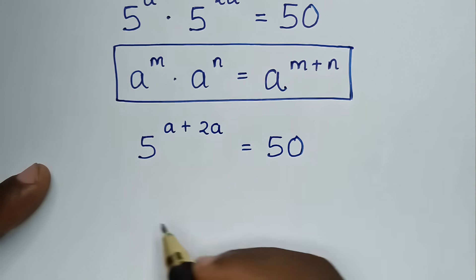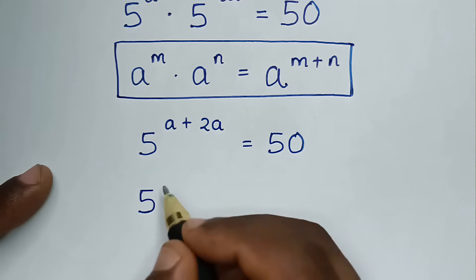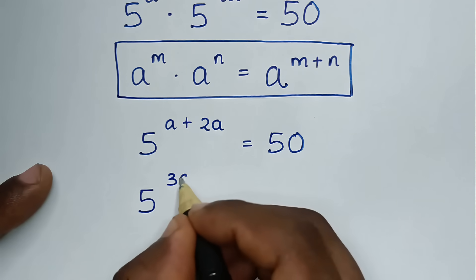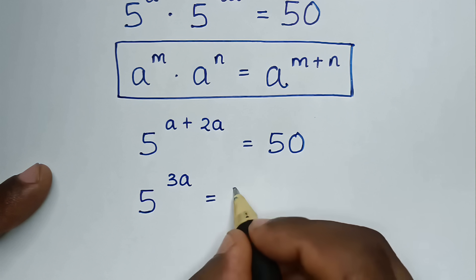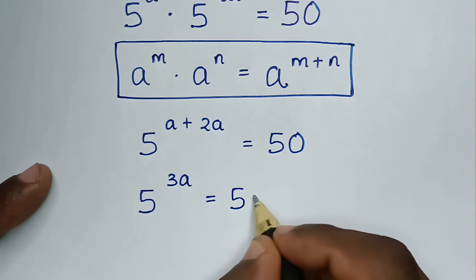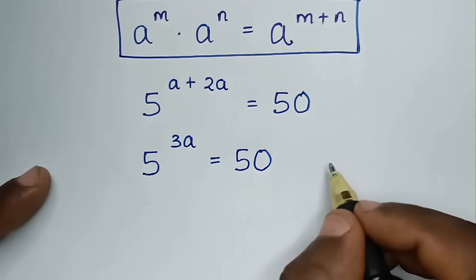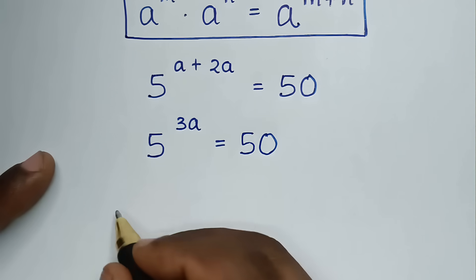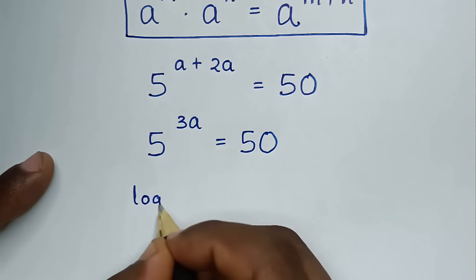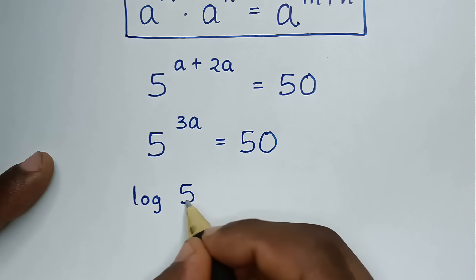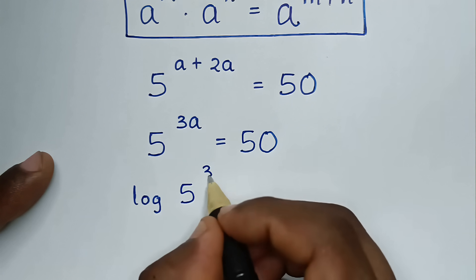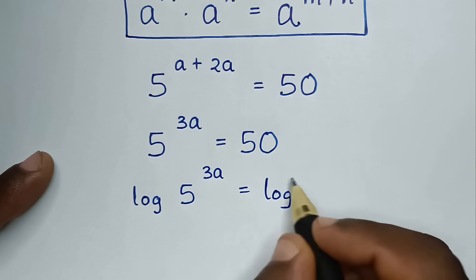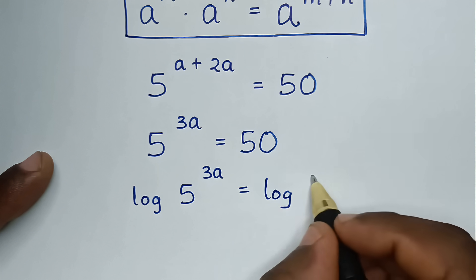Then in the next step, a plus 2a is 3a, so it will be 5 power of 3a is equal to 50. From here, we apply log to both sides, so it will be log of 5 power 3a is equal to log of 50.